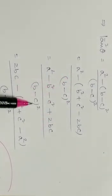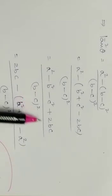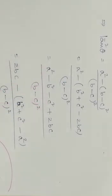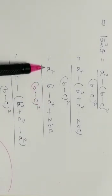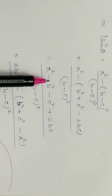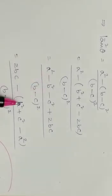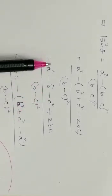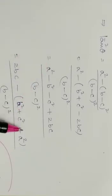Writing 2bc first, then taking minus common from the remaining square terms: minus common makes minus become plus and plus become minus. So we get 2bc minus (b squared plus c squared minus a squared), all divided by (b minus c) whole squared.